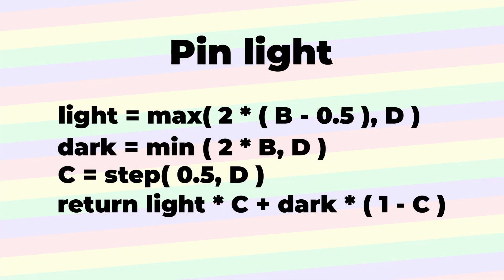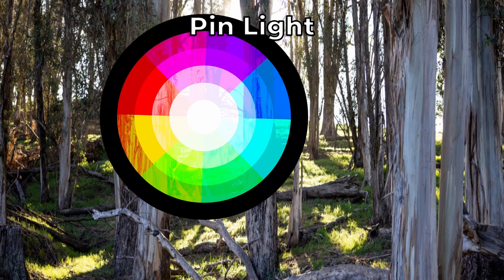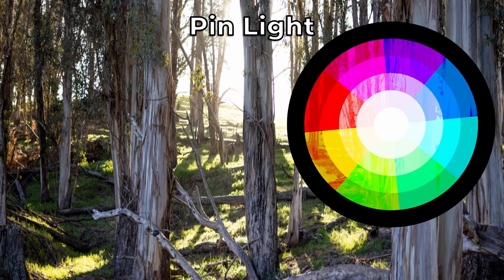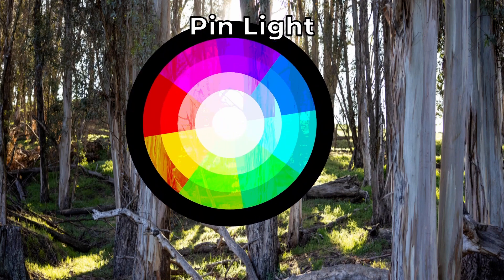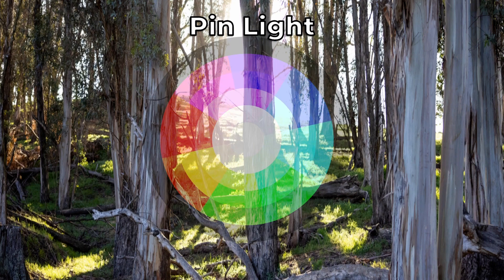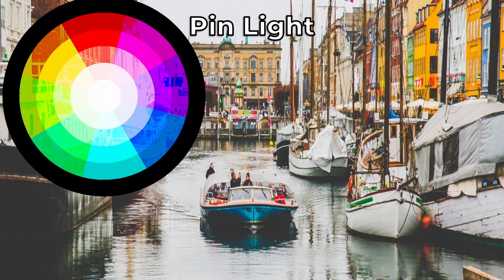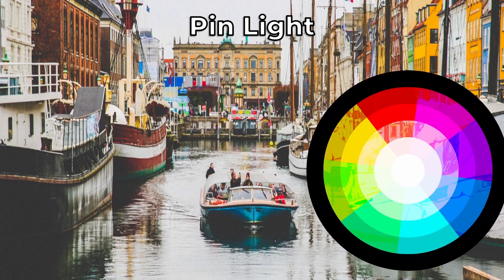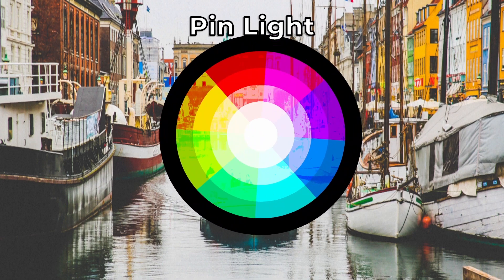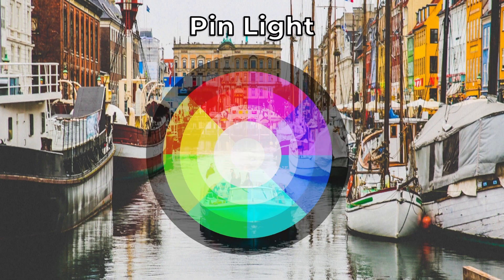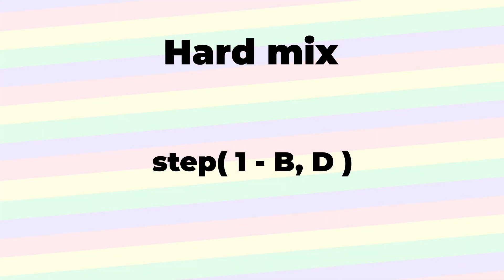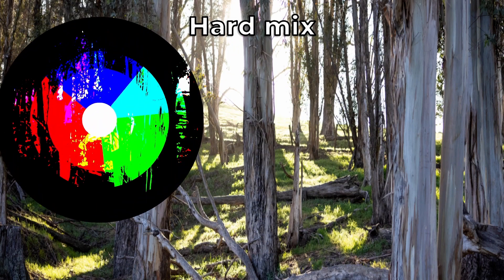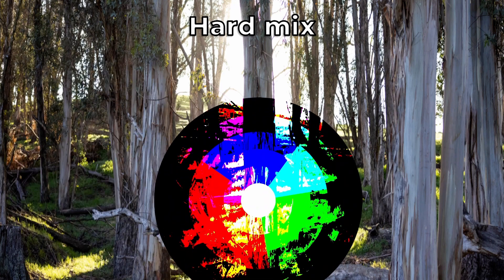Pin Light once again combines filters based on how the blend color compares to neutral gray, this time using the Lighten and Darken modes. It tends to eliminate mid-tones. The last contrast mode is Hard Mix. You might use it as a mask to pull out areas with certain colors.